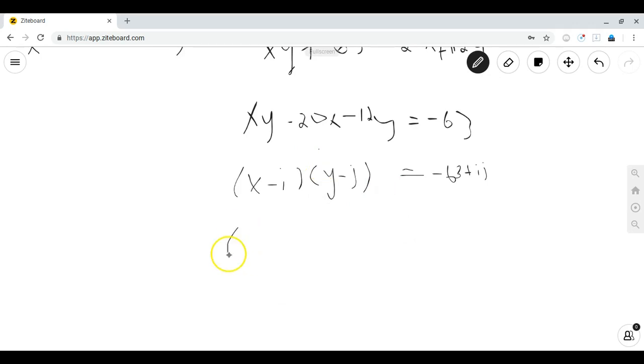Comparing coefficients gives that x minus 12 times y minus 20 is equal to negative 63 plus 240, which is equal to 177.